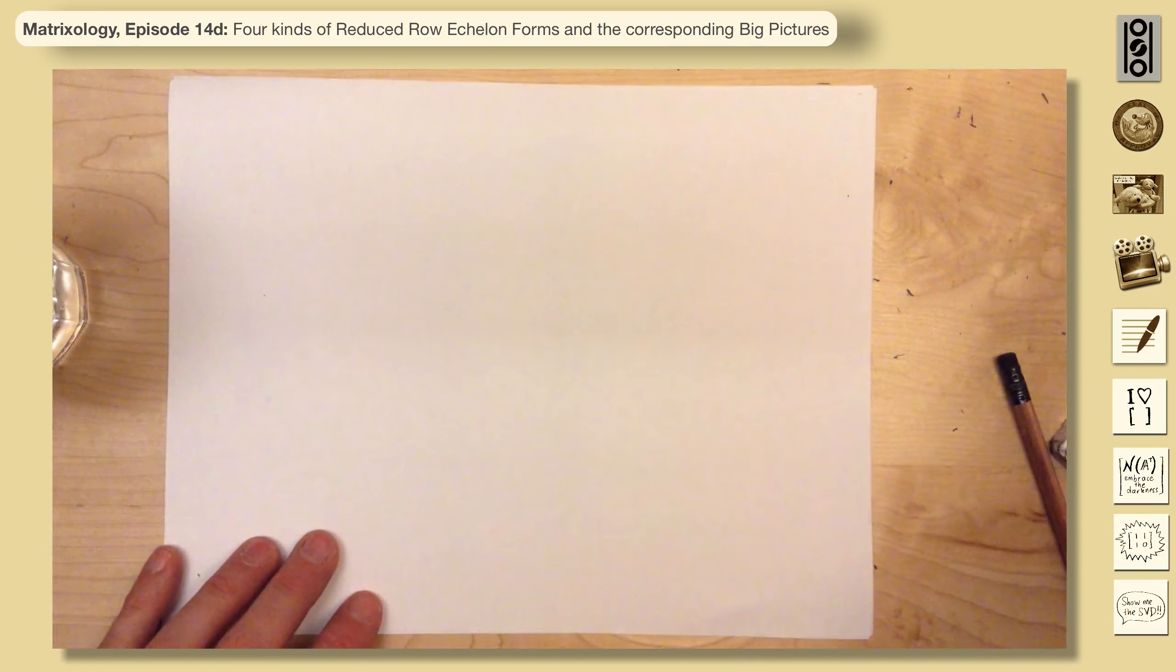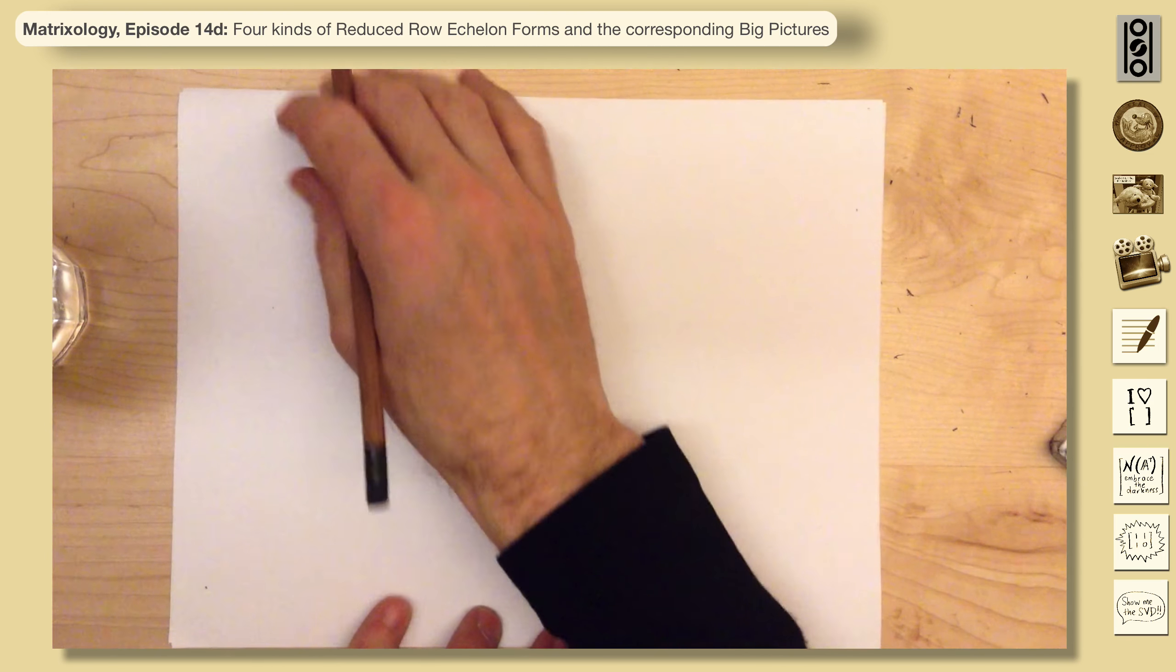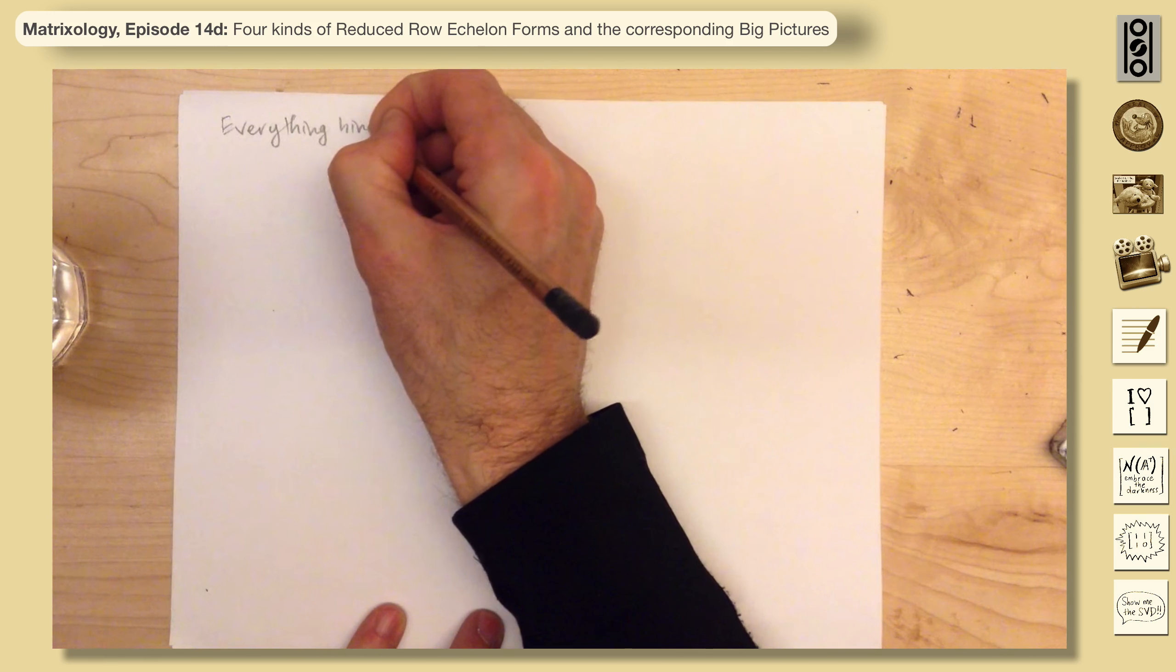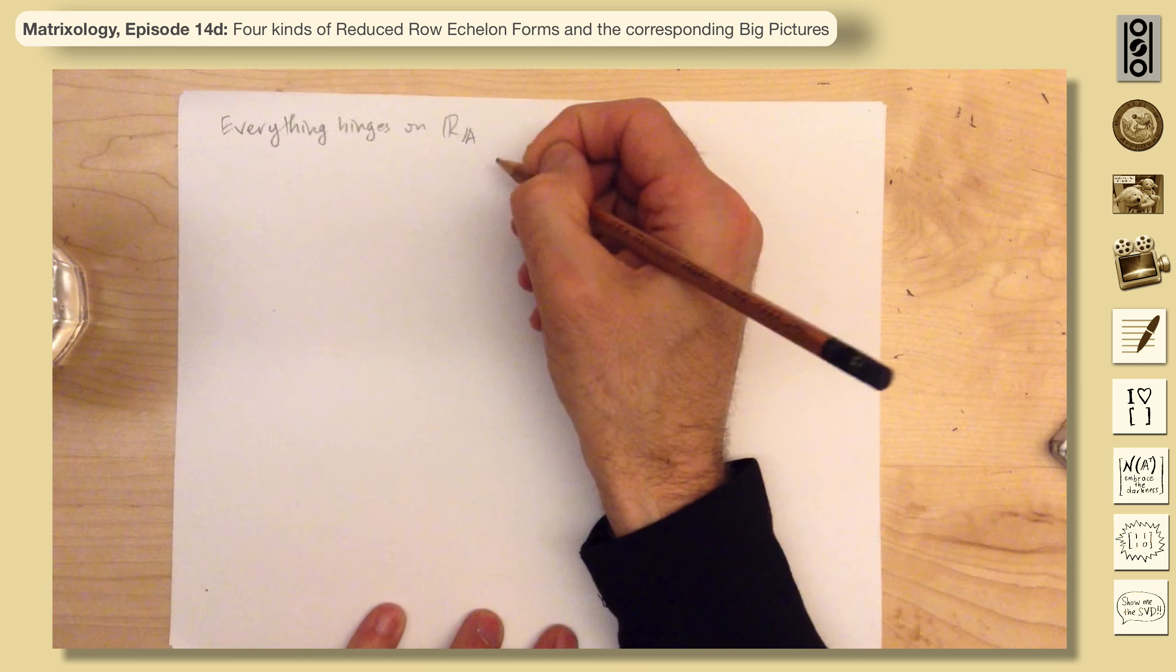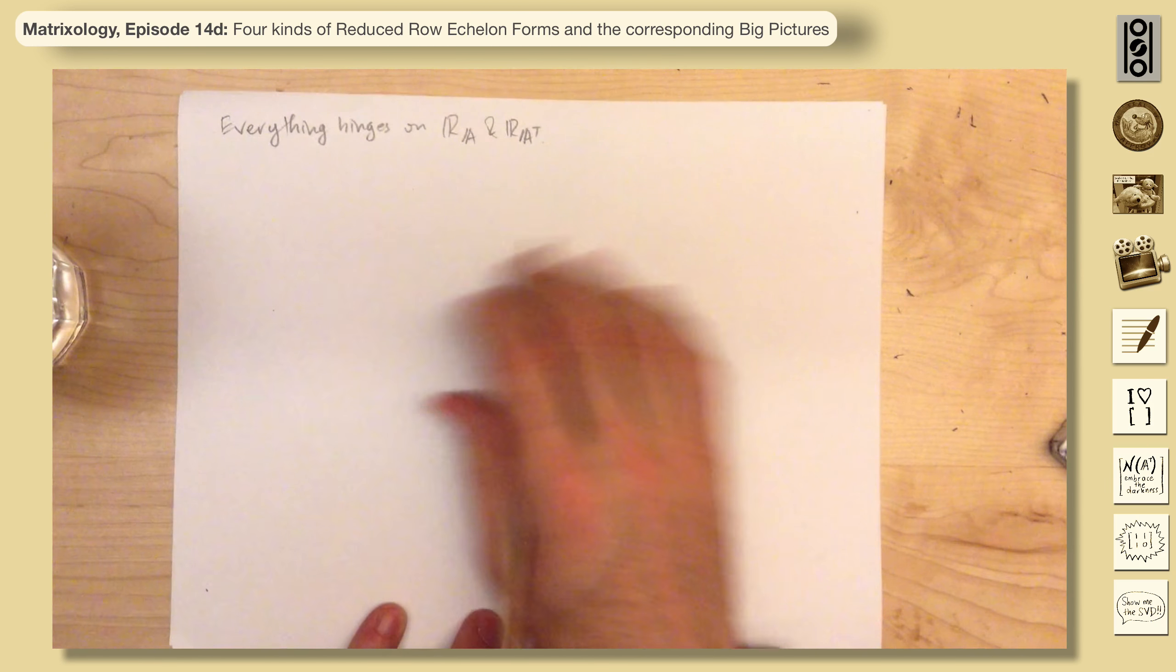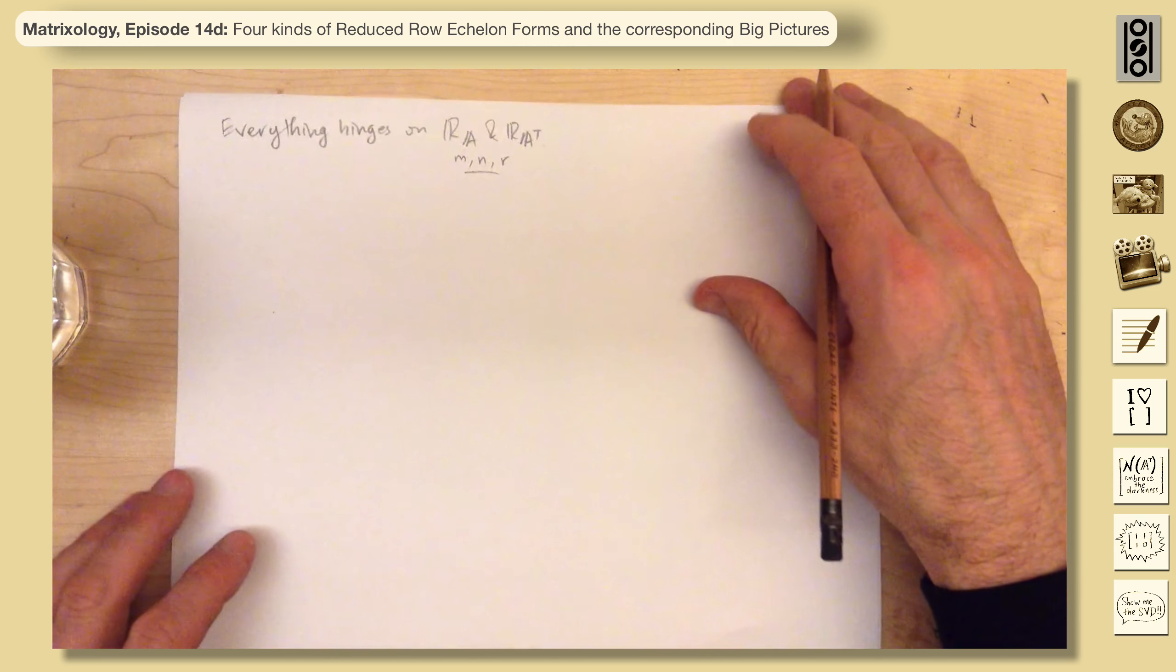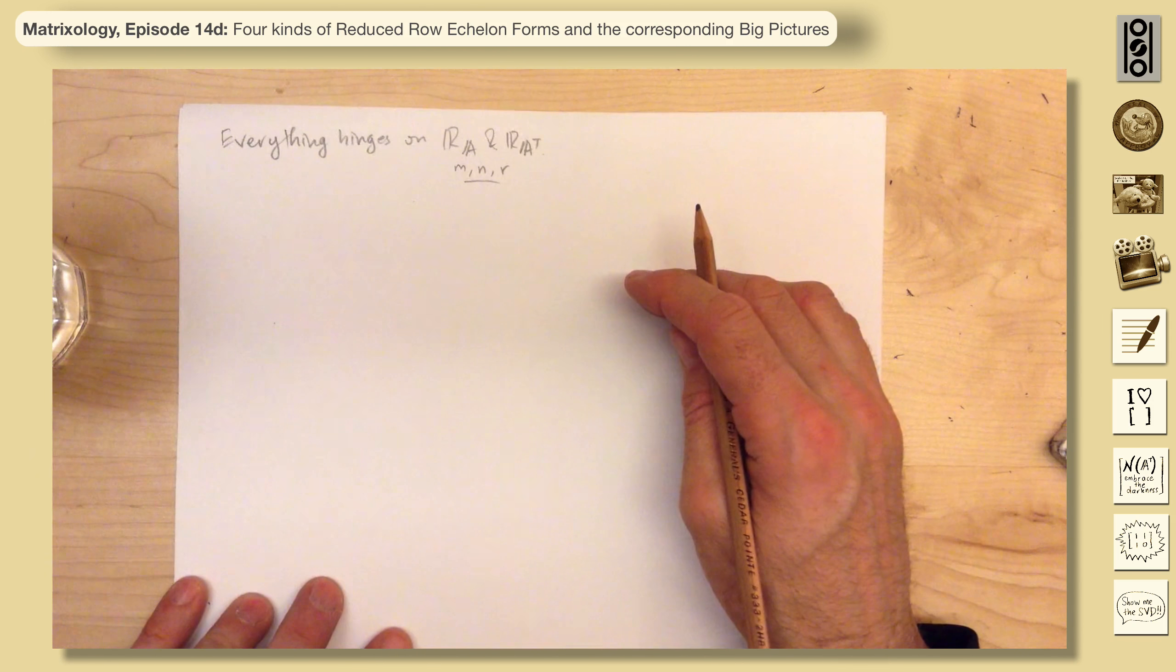So much hinges on these shapes. Everything hinges on reduced row echelon form of A and the reduced row echelon form of A transpose. In particular, these pieces that come out of them: M, N, and R. So let's see if I can draw, or just give you a table. You should know this table.